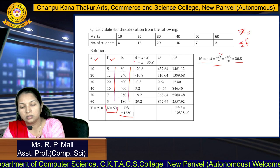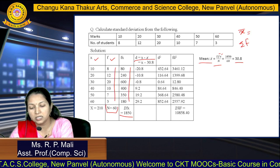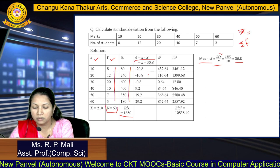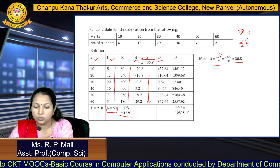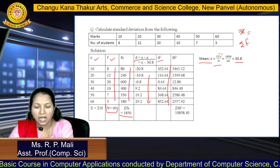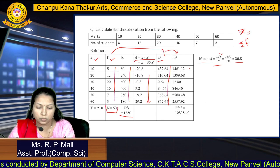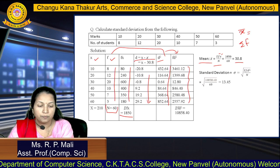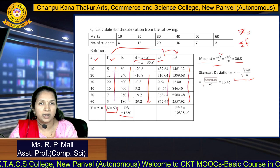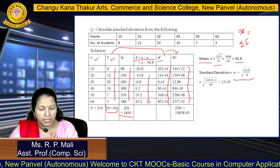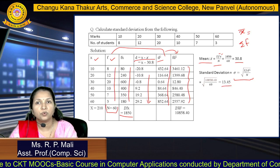After finding the mean of 30.8, we find the deviation D equals X minus X-bar: 10 minus 30.8 is minus 20.8, 20 minus 30.8 is minus 10.8, and so on for all values. After finding deviations, we square them to get D-square values. Then we multiply D-square by frequency to get F times D-square. Substituting into the formula: sigma equals root of summation F D-square divided by N, which is root of 10858.40 divided by 60, giving sigma equals 13.45.